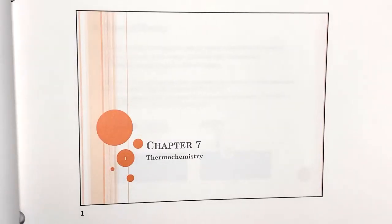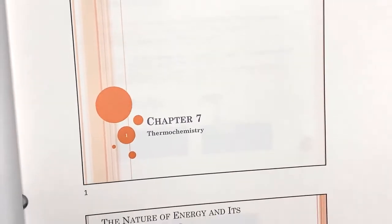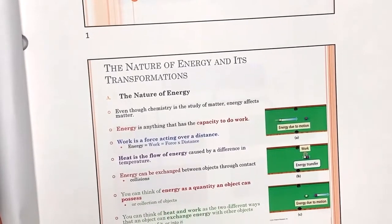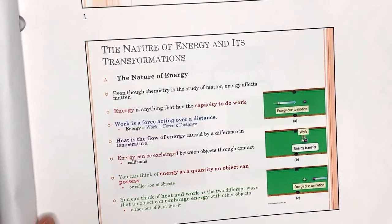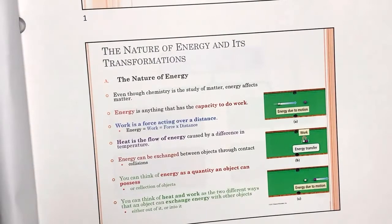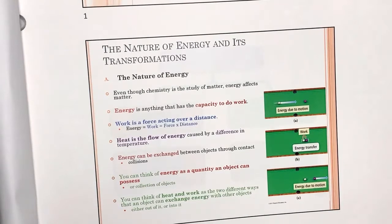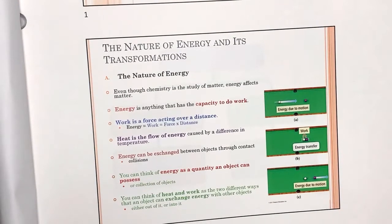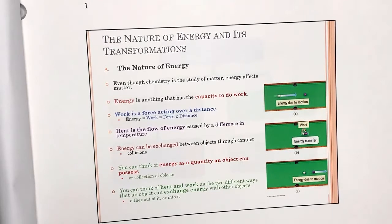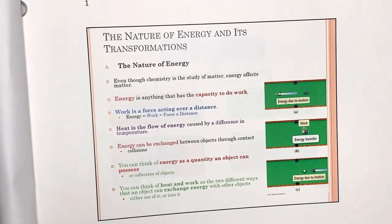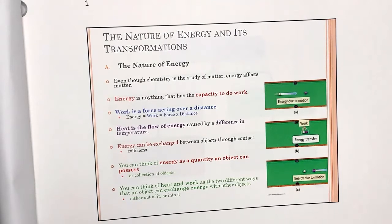Chapter seven covers thermochemistry, so we're going to study energetics and chemistry. The first thing we want to talk about is energy — energy is the capacity to do work, and work is force acting over a distance. Heat is a flow of energy caused by a difference in temperature, so you can observe heat exchange by looking at temperature differences.